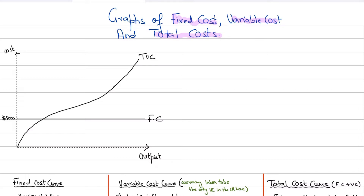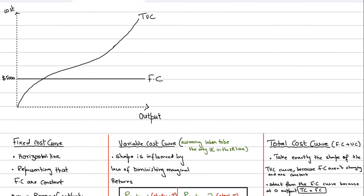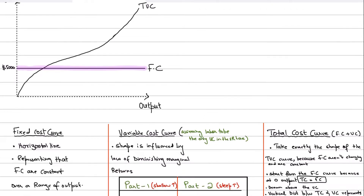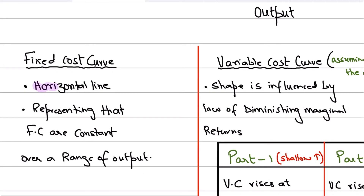First, let's see how we draw the graph of the fixed cost. Fixed costs are basically constant over the range of output. As we increase output, the fixed cost will not increase — it will stay the same. So even at an output level of zero, there would still be a cost being incurred, and that will be the fixed cost. You draw the fixed cost as a horizontal straight line, representing that fixed costs are constant over that range of output.